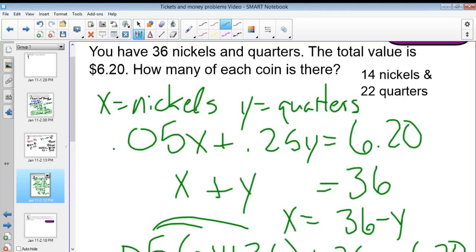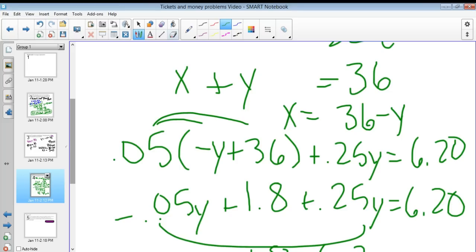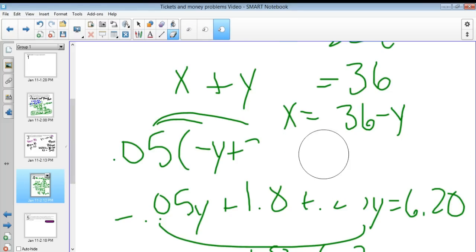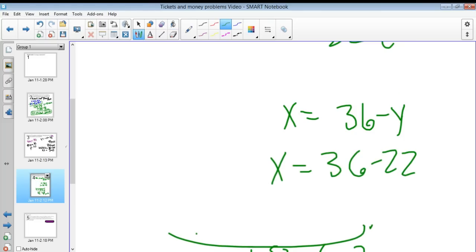That will give me 22 is equal to Y. We said that Y is equal to our quarters here. So I'm going to say 22 quarters. Then I plug that in. I'm going to plug it in right in this equation because it's already kind of solved for. I already have it solved for X. I don't really have to do any extra solving. And I say X is equal to 36 minus 22, which means X has to be equal to 14.